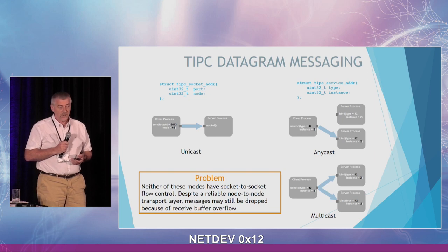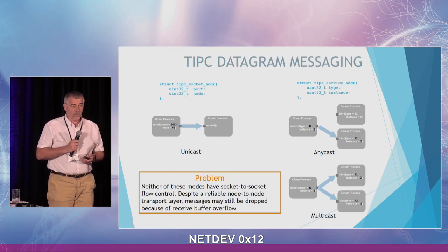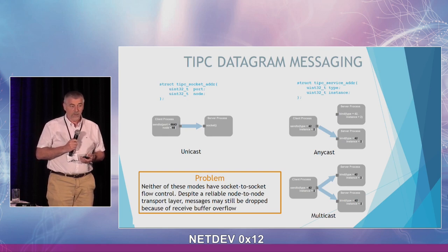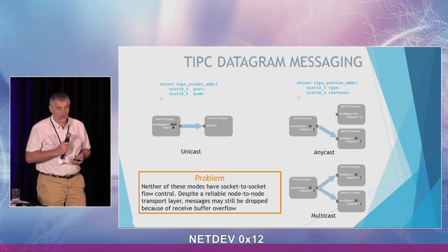What is specific to TIPSY is that datagram messaging can be done in several different ways, with different address types. We have a socket address, which consists of a port number and a node number — something you get from the system when you create the socket — and with that you can send unicast messages to one specific socket. The second address type is a service address. You address services without knowing where the service is. This consists of two integers: a type identifier and an instance identifier, both chosen by the user when writing the program.